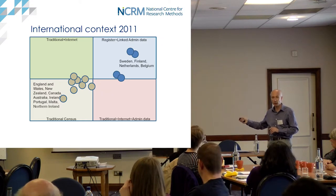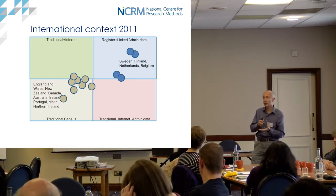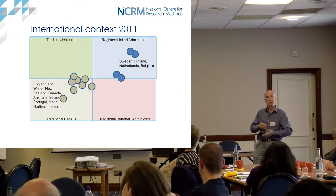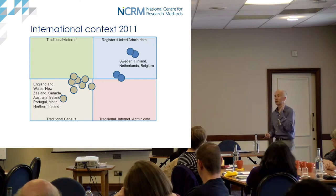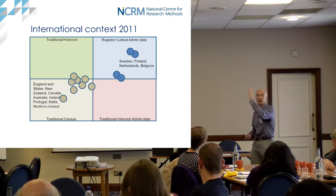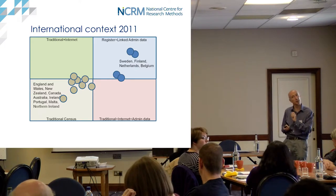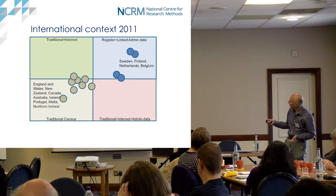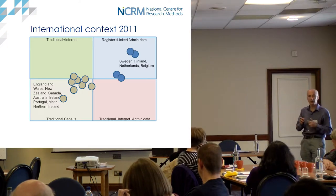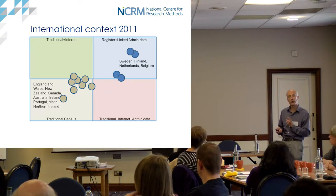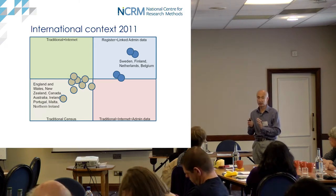Some broadly Scandinavian countries working with a population register have long since parted from asking those traditional questions at all. They're effectively building the whole thing from an integrated system of linked data - but the key, as James was talking about, is that it's based on a population register with a single person identifier that society is happy with government agencies holding and using. That effectively allows you to connect health, education, housing, employment, taxation, and benefits.